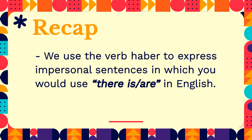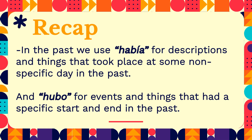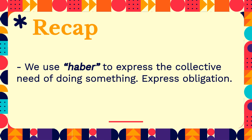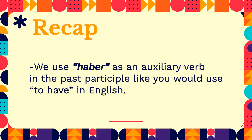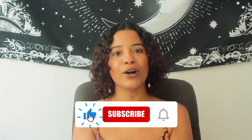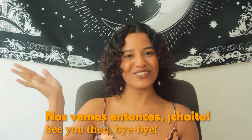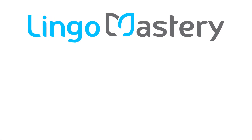Let's wrap up with a recap. We use haber to express impersonal sentences where you'd use 'there is' or 'there are' in English. In the past, we use había for descriptions and non-specific past situations, and hubo for events with a specific start and end. We use haber to express collective obligation or general rules. And we use haber as an auxiliary verb in the past participle, just like 'to have' in English. That's it for today — I hope you found this useful. Hit the like button, leave a comment, share it, and don't forget to subscribe. We upload videos every Tuesday. Nos vemos entonces. Chaito.